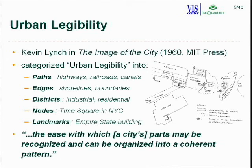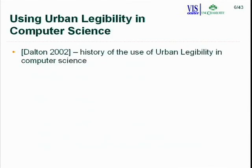Kevin Lynch defined urban legibility as the ease with which a city's parts may be recognized and organized into a coherent pattern. In computer science terms, if you can deconstruct a city into these urban legibility elements, you can still organize the city into that coherent pattern. Ruth Dalton's 2002 paper chronicles the history of urban legibility use in computer science, breaking it into two groups.